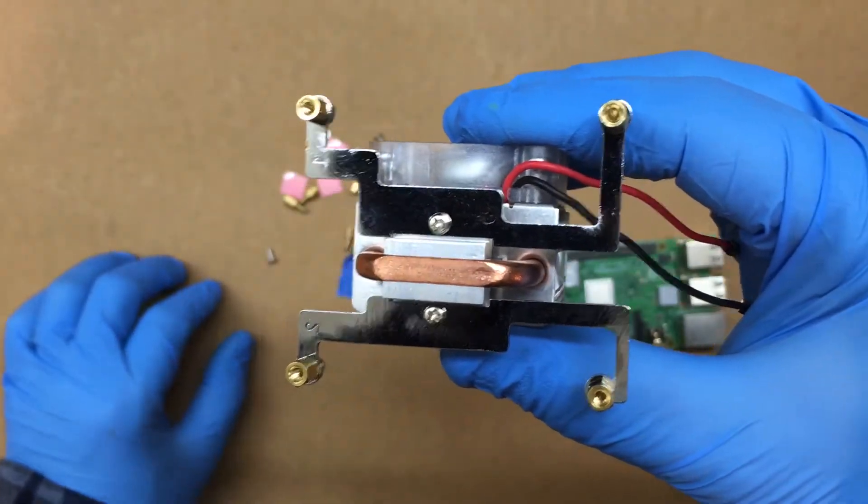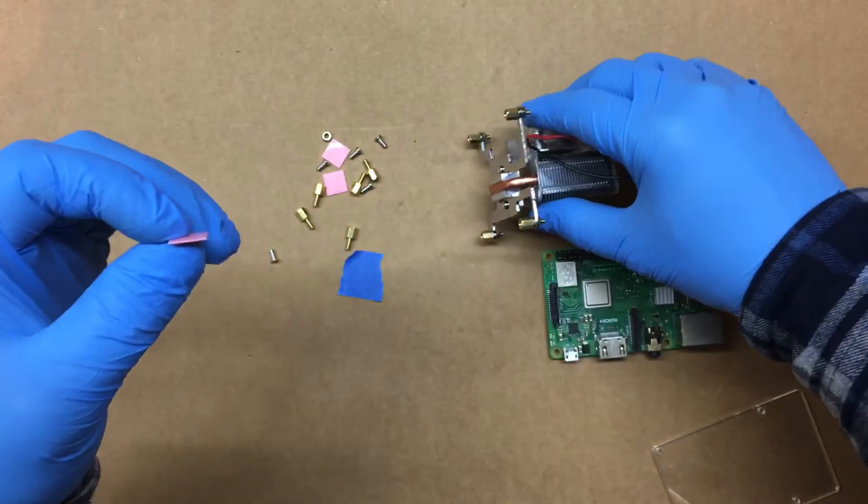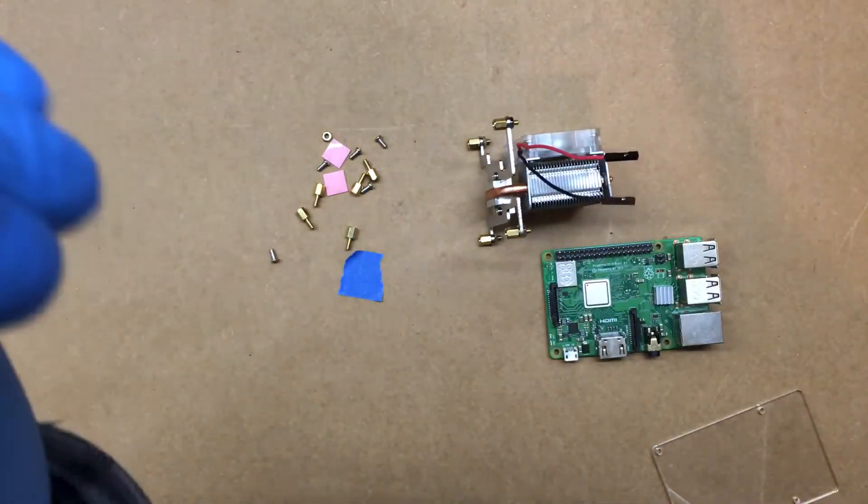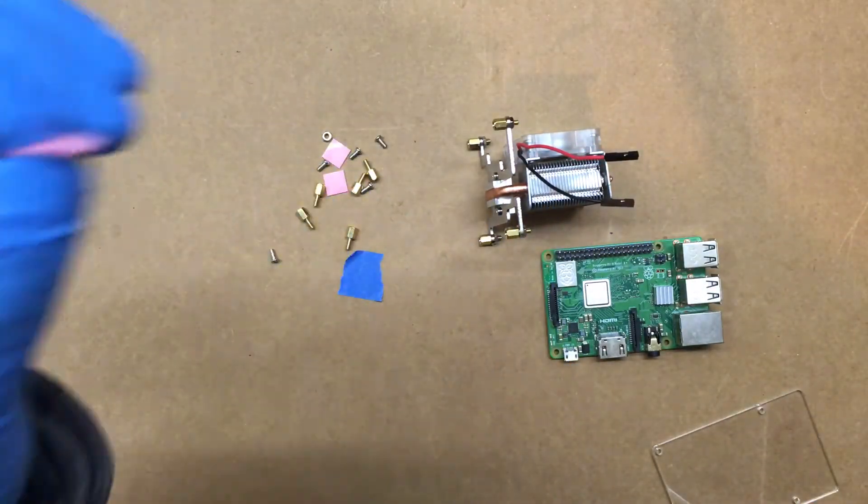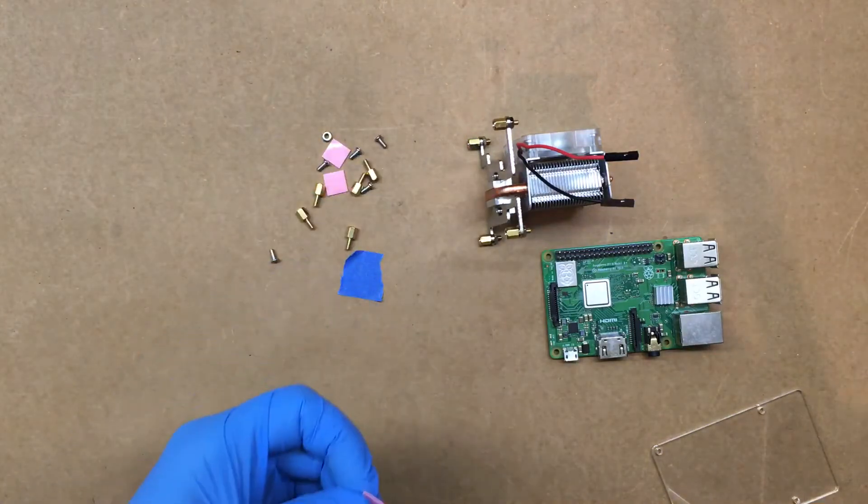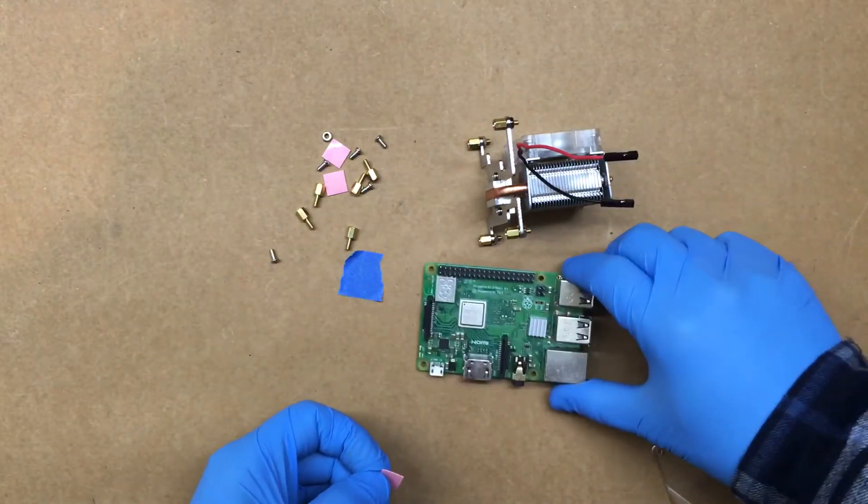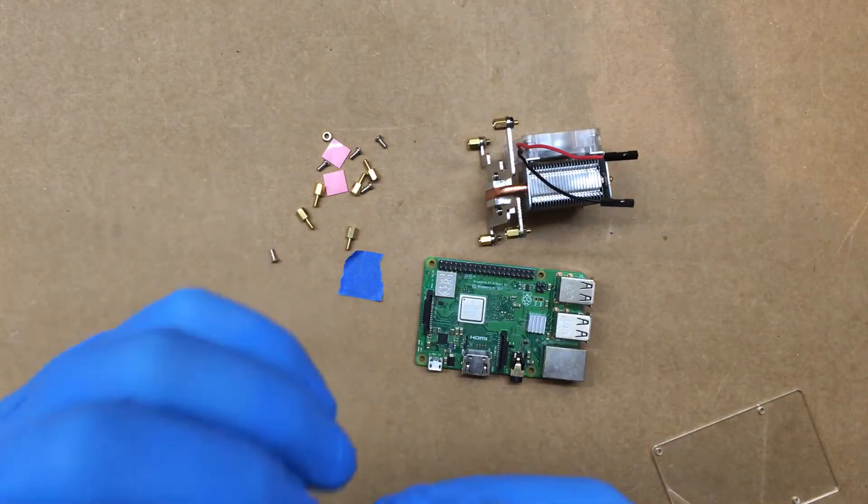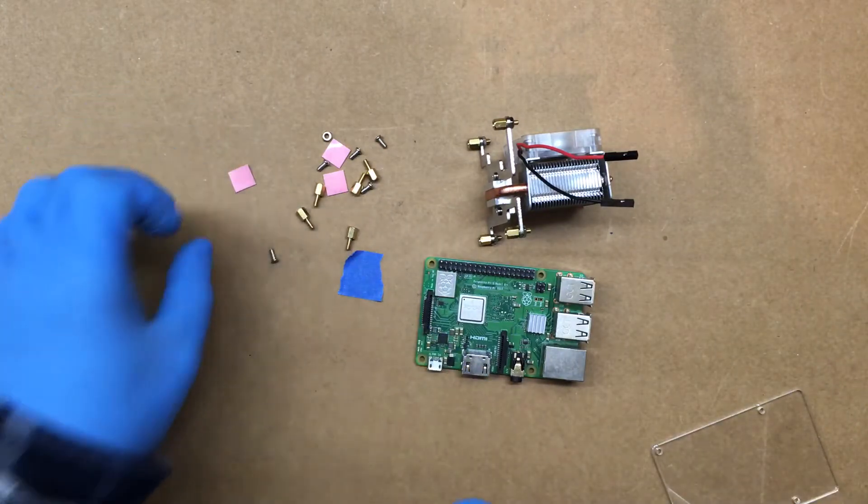It includes three of these little pads here that go in between the heatsink and the Pi itself, but I don't think I'm going to use these. I think I'm actually going to get some CPU stuff that you would use on a computer.